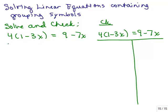On the left-hand side I have parentheses, so I need to do the distributive property — 4 times 1 and 4 times 3x. So that will give me 4 minus 12x equals 9 minus 7x.